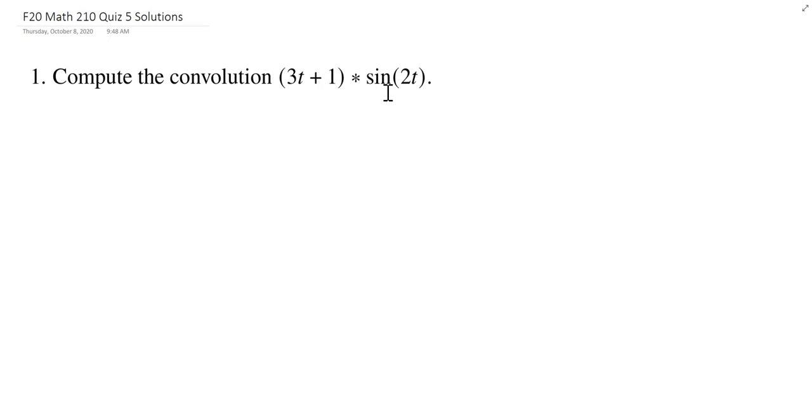There may be several ways we can approach this, but here we're just going to use the definition of the convolution. So 3t plus 1 convolved with sine of 2t is defined using an integral. We integrate using this auxiliary variable tau as is conventional, integrating from 0 to t.